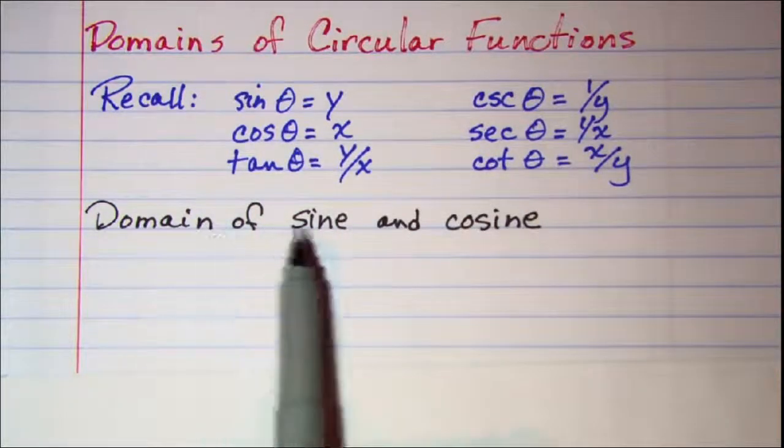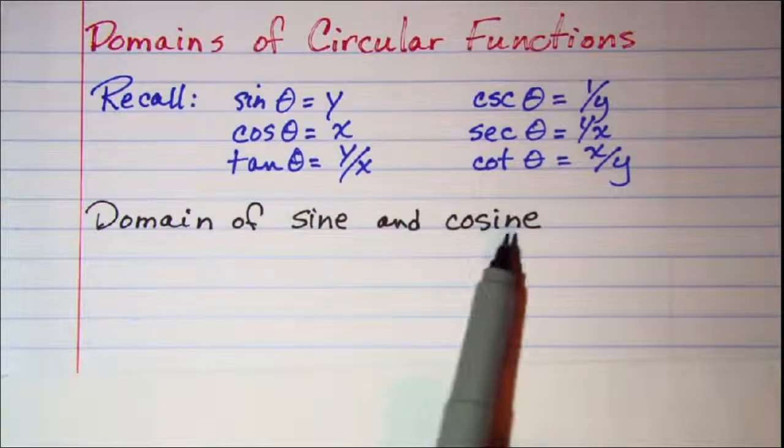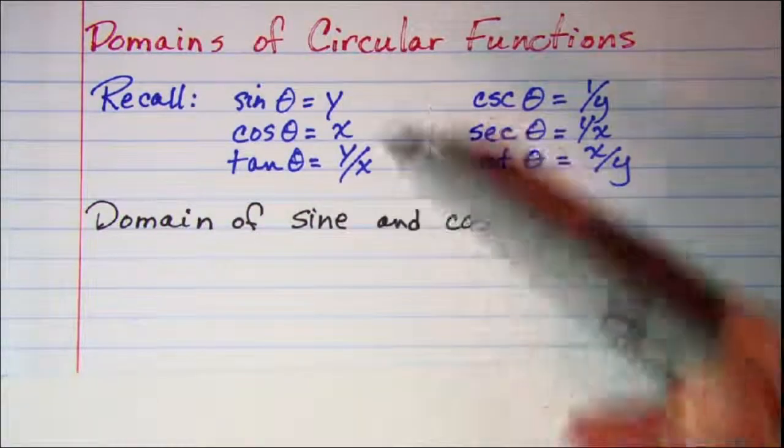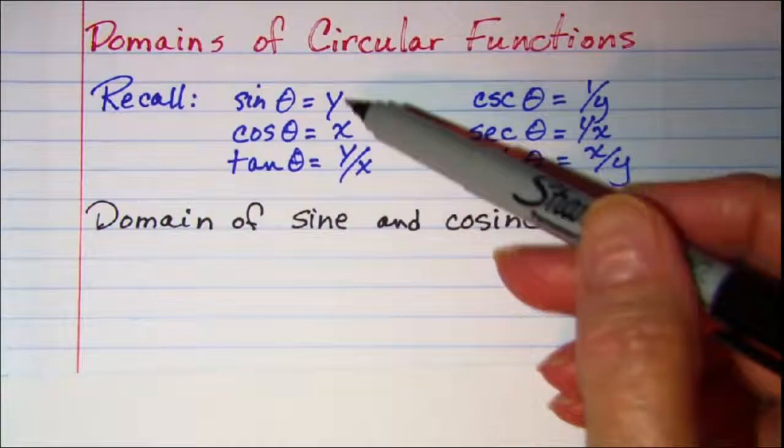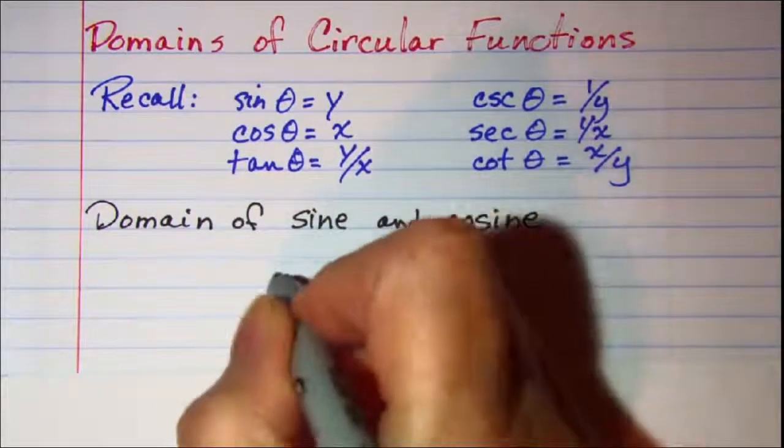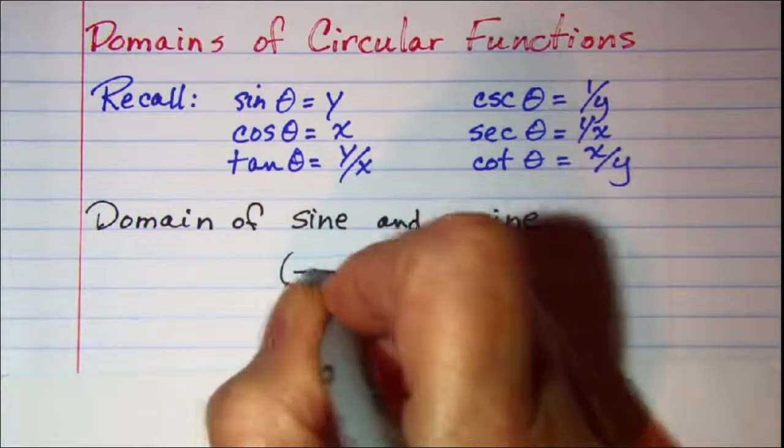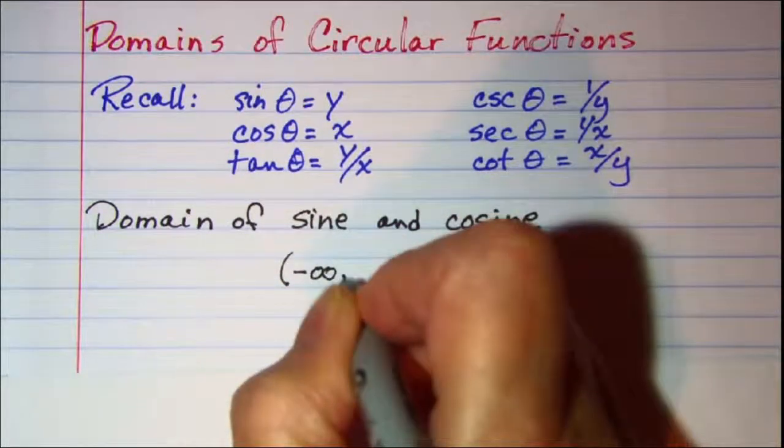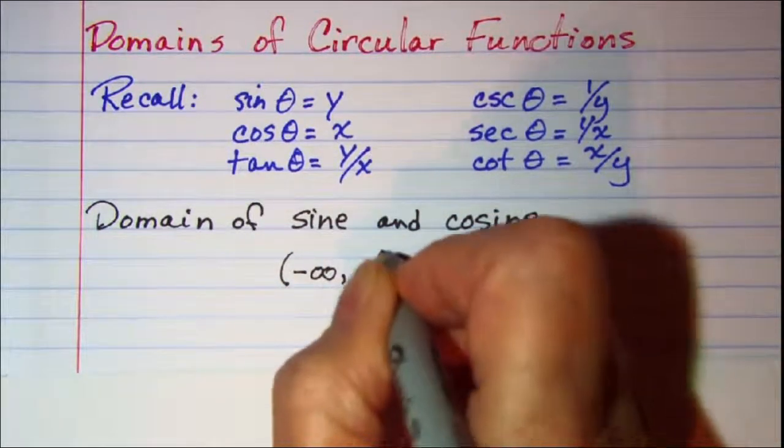The domain of the sine and cosine functions: since those are just x and y, they are going to be all real numbers, which we show as a negative infinity to positive infinity interval.